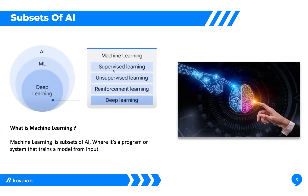First, what is supervised learning? Supervised learning is training a model by inputting labeled data with tags and expecting probabilities as output. For example, predicting the possibility of a heart attack for a person. We train a model from patient details of those who previously had heart attacks, based on their daily routine. Once the model is trained, it will predict the possibilities of a heart attack — that is called supervised learning.